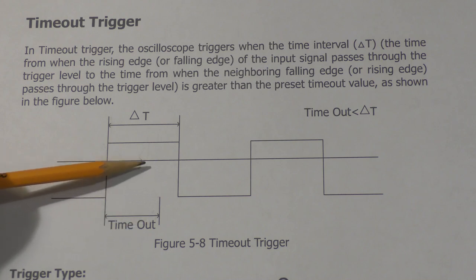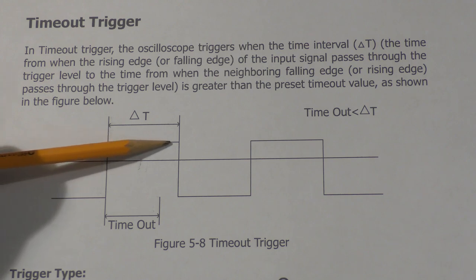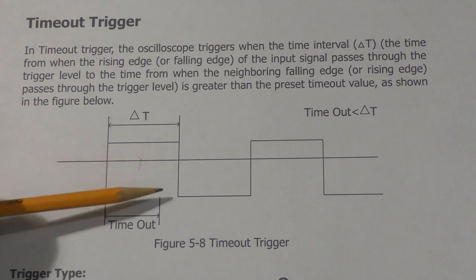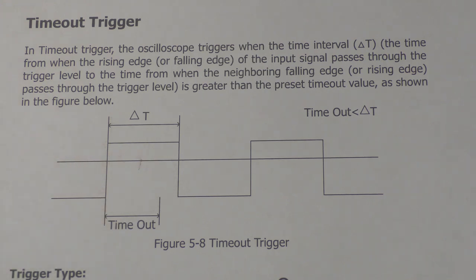And then it stays high for essentially two half cycles and you want to look for that. Well you set the timeout to something more than one half cycle, and then if there is a clock that is longer than the normal clock, it will trigger on it.